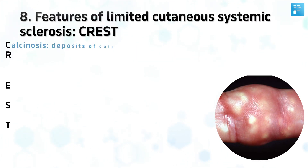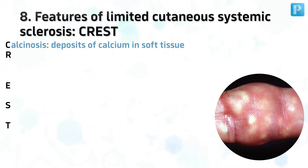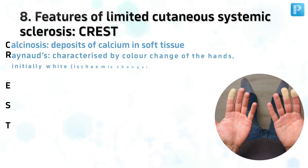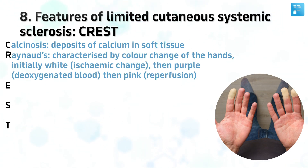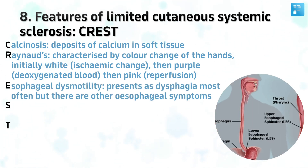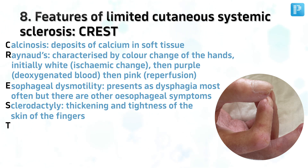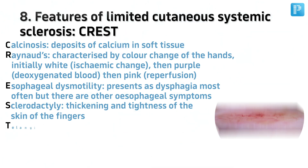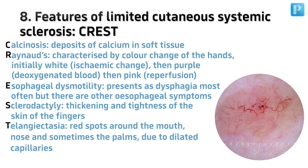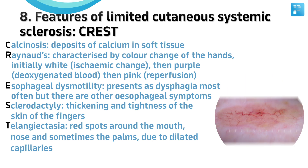Number 8. Features of Limited Cutaneous Systemic Sclerosis: CREST. Calcinosis — deposits of calcium in soft tissue; Raynaud's — characterized by color change of the hands, initially white, then blue/purple, then pink; Esophageal Dysmotility — presents as dysphagia most often; Sclerodactyly — thickening and tightening of the skin of the fingers; Telangiectasia — red spots around the mouth, nose, and sometimes the palms due to dilated capillaries.